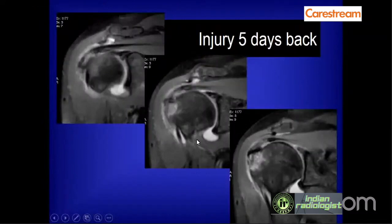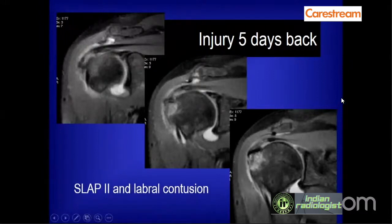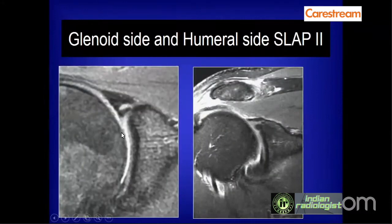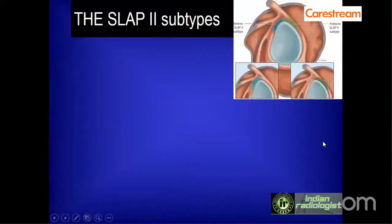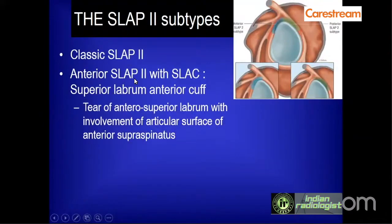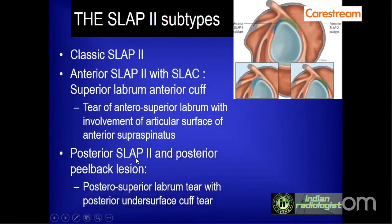In a case example, a patient showed abnormal signal in the labrum with hyperintensity greater than the normal inferior labrum, reported as SLAP 2 and labral contusion. SLAP 2 tear can occur on the glenoid side or the humeral side. SLAP 2 tears can be classic SLAP 2, SLAP 2 with SLAC (involving the anterior cuff), or posterior SLAP 2 with posterior peel back lesion involving the posterior labrum and posterior cuff.